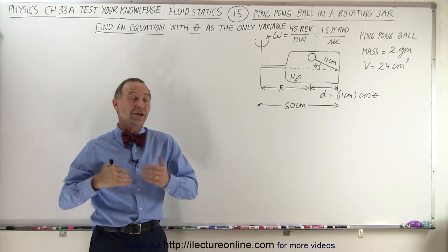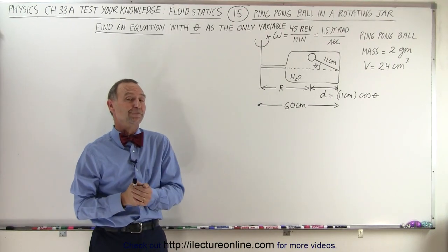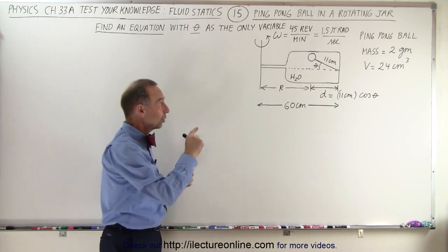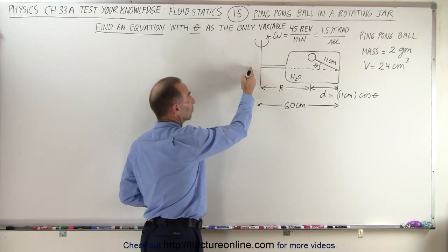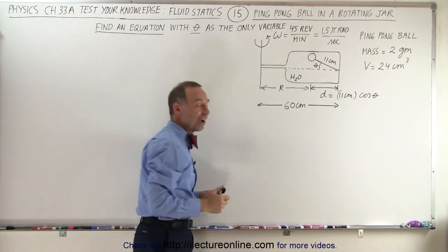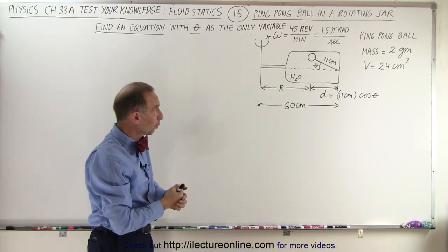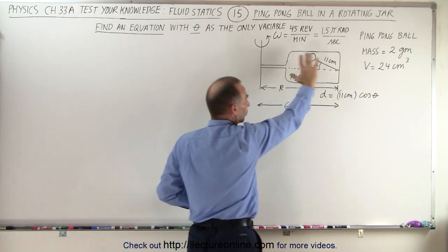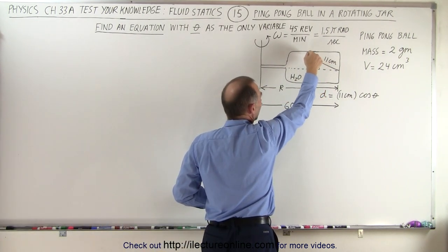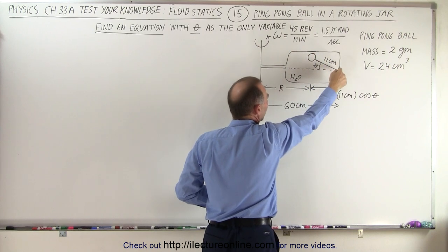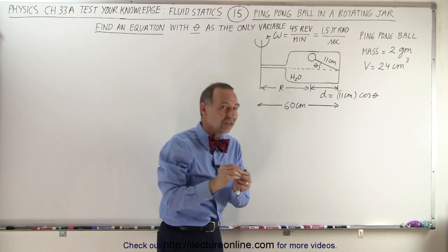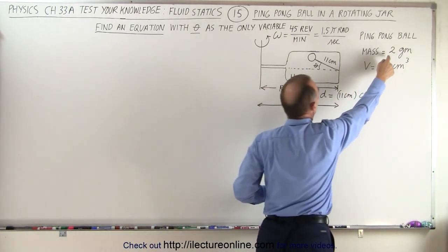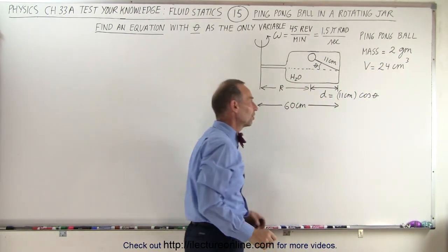Welcome to ElectronLine. Our next example is quite interesting. We have a jar filled with water, which is rotating about the vertical axis with an angular velocity of 45 revolutions per minute, which is 1.5 pi radians per second. Inside the jar we have a ping pong ball attached to an 11 centimeter long string, and the string is attached at the very end of the jar. The mass of the ping pong ball is 2 grams and the volume is 24 cubic centimeters.